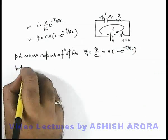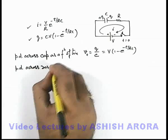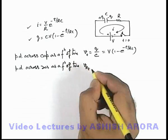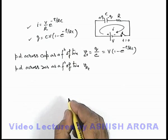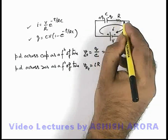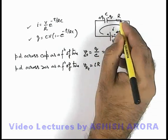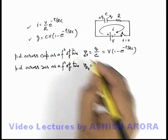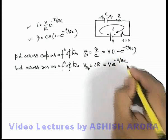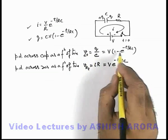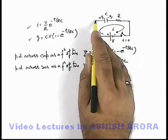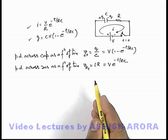Similarly, the potential difference across the resistance as a function of time can be written as I×R. Substituting the value of I, we get V_R = V × e^(-t/RC). You can also add these two potential differences and you will see that their sum equals the EMF of the battery, because the sum of the two potential differences must equal the potential difference across the battery, which is its EMF.